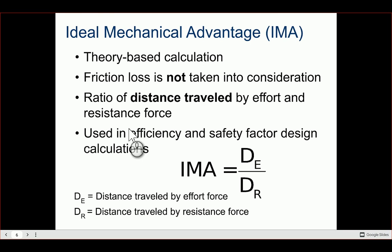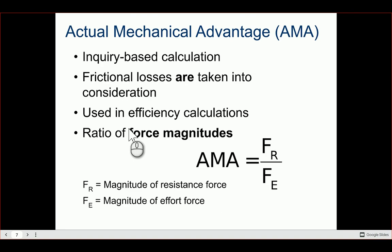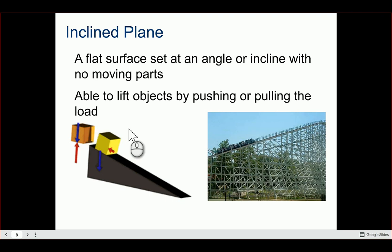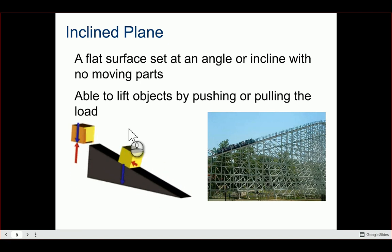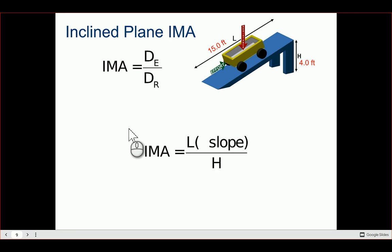We're going to make some changes to IMA for these three machines to make things a little more intuitive. AMA stays exactly the same. For the incline plane — a flat surface set at an angle with no moving parts, used to lift objects by pushing or pulling — the IMA formula is going to change. On your engineering formula sheet, L replaces de (effort distance) and H replaces dr (resistance distance).